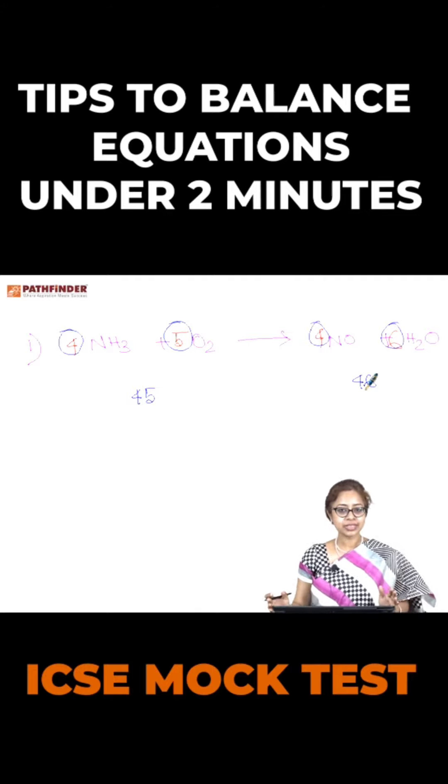So if you write down the reactants and products in the correct order, you'll see this helps you remember: 45 followed by 46.